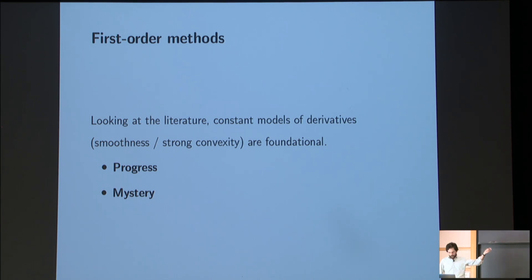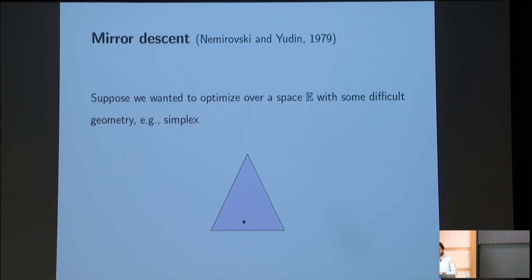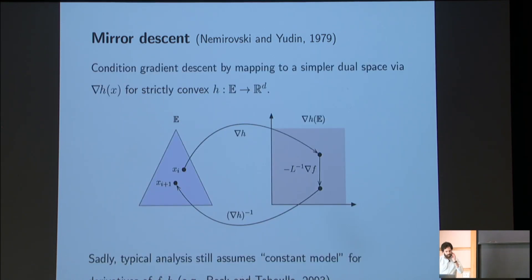So I'm going to talk about a little bit of progress on this question, and then leading to the mystery at the end. OK. So for progress first. And this starts with, again, an old idea, which is the idea of mirror descent. Suppose we were trying to optimize over a space that had some kind of difficult geometry, for example, a simplex. So now we're not over a sort of really nice R^d, but we are trying to optimize over the simplex to find the little star.